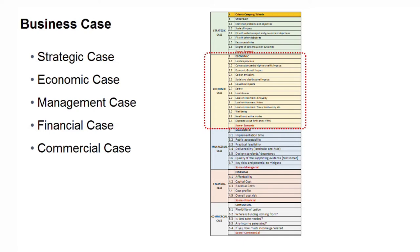The overall business case includes a strategic case — what is the relevance of the project, how it aligns with national, local, or regional policies — and the economic case, which is the key point where the government decides it's value for money. The management case covers whether the transport project can be delivered in practice. The commercial case is about how the government can procure things, such as rolling stock, around that project. I'll focus on the economic case in this presentation.